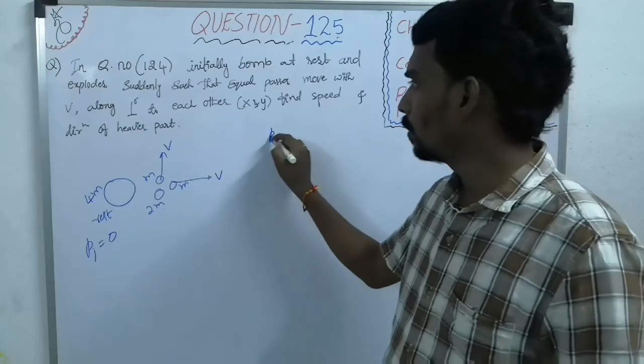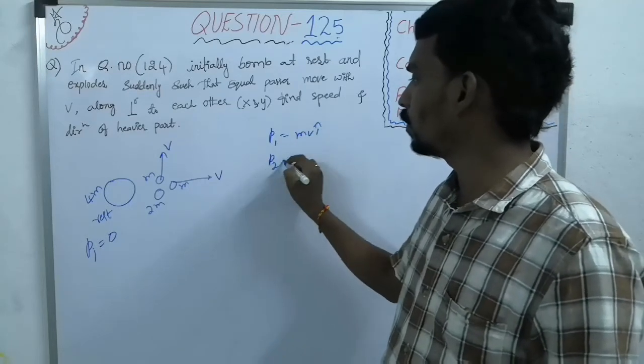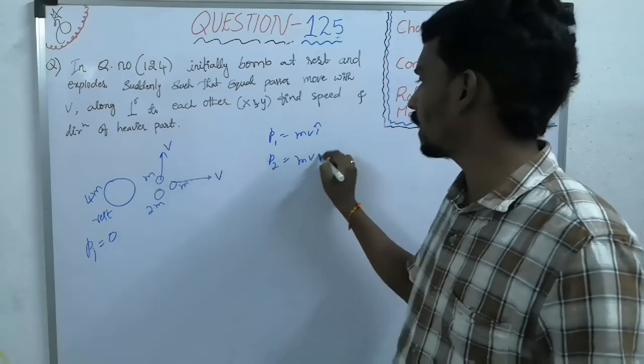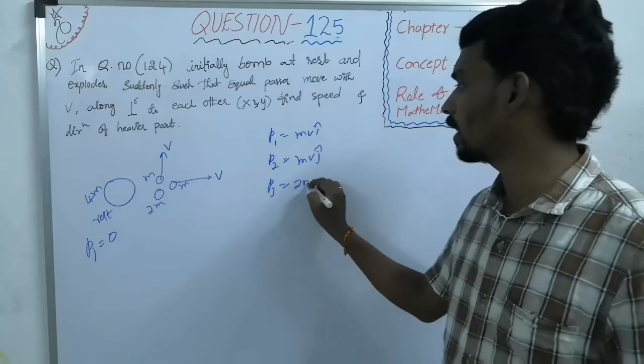So that, p1 is mv i cap, p2 is mv j cap and p3, we do not know which direction, let us take v bar.